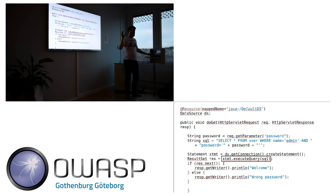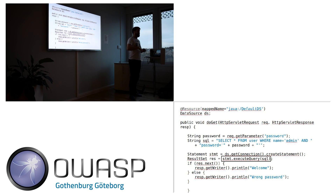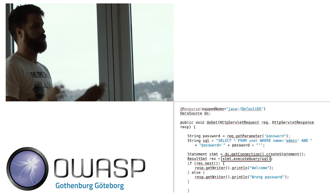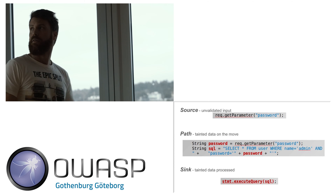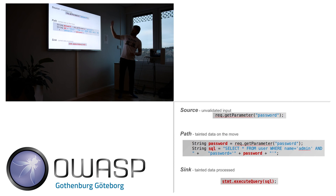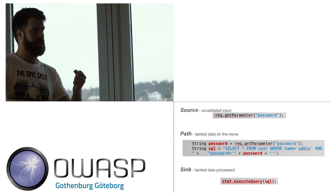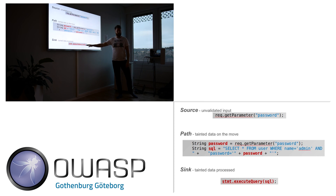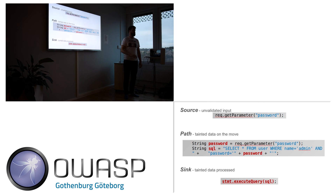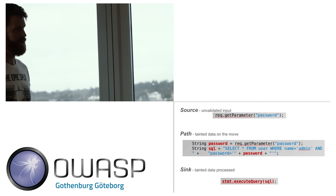This data flow is what static code analysis tools — the SCA tools — should be able to find. This is known as the source, where something comes in, something possibly nasty. And then it travels down in your code, and the really bad thing happens somewhere. Source, path, and sink — those are the terms I use.